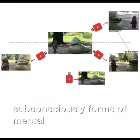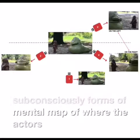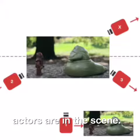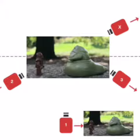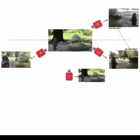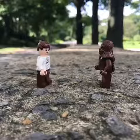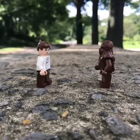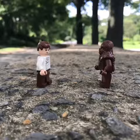The camera must always stay on one side of the line. All coverage should be shot from one side or the other of the imaginary line. The audience subconsciously forms a mental map of where the actors are in the scene.